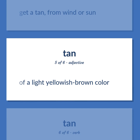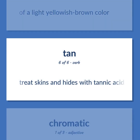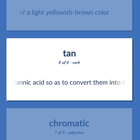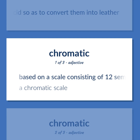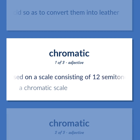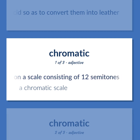Of a light yellowish-brown color. Treat skins and hides with tannic acid so as to convert them into leather. Based on a scale consisting of 12 semitones — a chromatic scale.